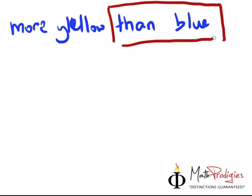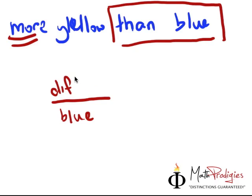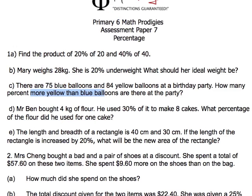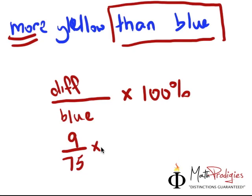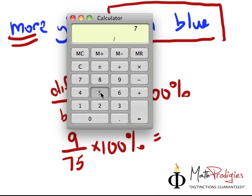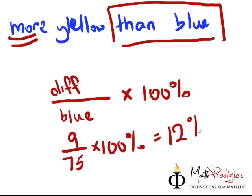Than blue tells you that your denominator, that means the thing at the bottom here, must be the number of blue balloons. How many more, that means the difference, should be above. So, to find the answer, you have to take difference over the blue balloons times 100%. In this case, 84 and 75 gives you 9. How many blue balloons are there? There are 75. So, therefore, you get actually 9 over 75 times 100%. In this case, you get 12%. So, the correct base is 75.